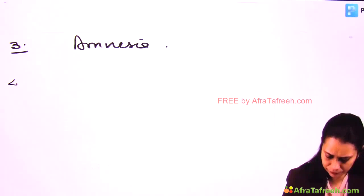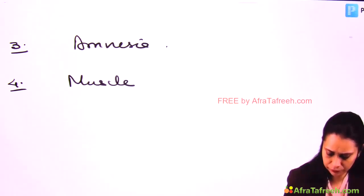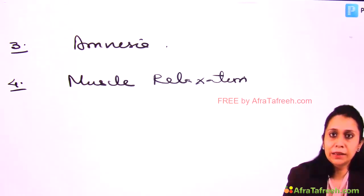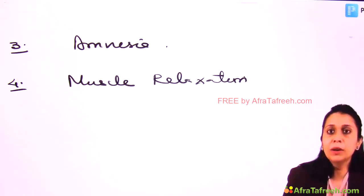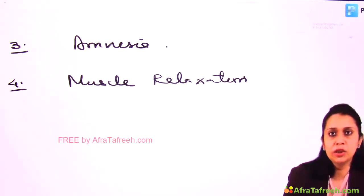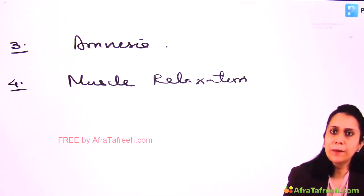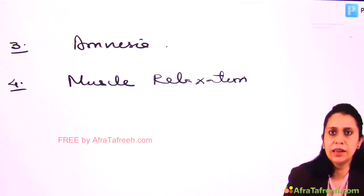Fourth is Muscle Relaxation. We relax all the muscles of the body either by paralyzing or by using agents which decrease tone, depending upon the surgical demand. If the surgery requires paralysis — like abdominal surgery — we give neuromuscular blockers and paralyze the patient. If surgery does not require paralysis, a little relaxation can be achieved by other anesthetic agents.